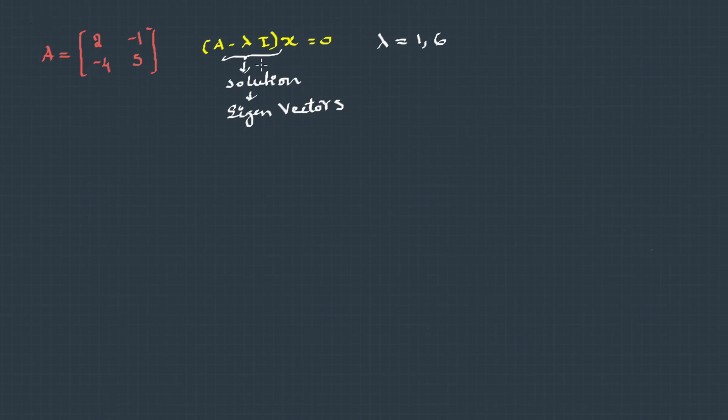So let's solve this equation to find the eigenvectors. This can be written as shown, and each eigenvalue produces a different eigenvector. So let's start with the first one.